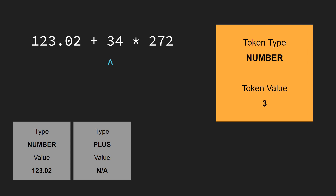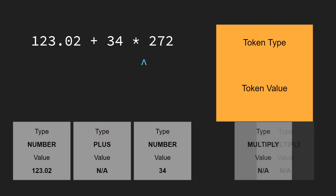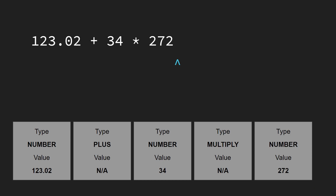Next we have another white space, once again ignored. Now we have another digit, the start of another number token, and another digit is added to it. Then we come across a white space, so we are finished with that number token. Next is a multiply operator, giving us a multiply token — similarly no value associated. Another white space is ignored, and we move on to a final number token, building up each digit. That is the end of the lexing process and we can see all the tokens built up.